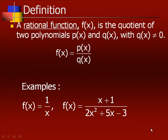A rational function f of x is the quotient of two polynomials p of x and q of x, with q of x not equal to zero. A couple of examples would be the function 1 over x, or something like f of x equals x plus 1 over 2x squared plus 5x minus 3.